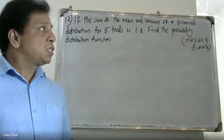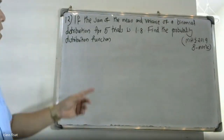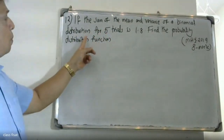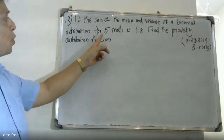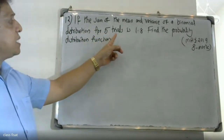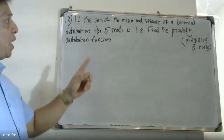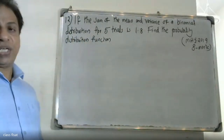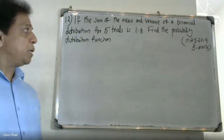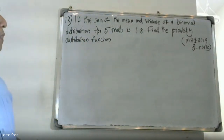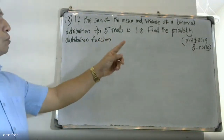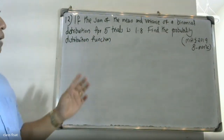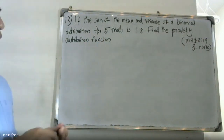Good morning students. The question is: if the sum of the mean and variance of a binomial distribution for five trials is 1.8, find the probability distribution function. We will find the probability distribution function manually using the binomial distribution.